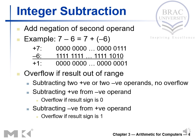In the previous slide we saw how overflow can occur in integer addition. Now we will see if it is possible to have overflow in integer subtraction. We have the example 7 minus 6, which we can write as 7 plus (−6). The result is positive one, and the binary form of that addition is shown here — confirming the result is positive one.